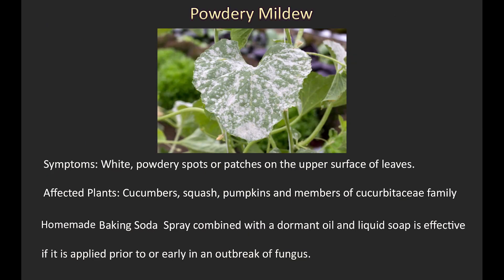1. Powdery mildew. Symptoms: white, powdery spots or patches on the upper surface of leaves. Affected plants: cucumbers, squash, pumpkins, and other members of the Cucurbitaceae family. A homemade baking soda spray combined with a dormant oil and liquid soap is effective if applied prior to or early in an outbreak of fungus.